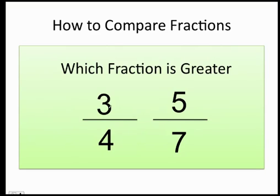Anytime you have two fractions such as these two, you're going to go ahead and multiply the denominator with the numerator of the opposite fraction.